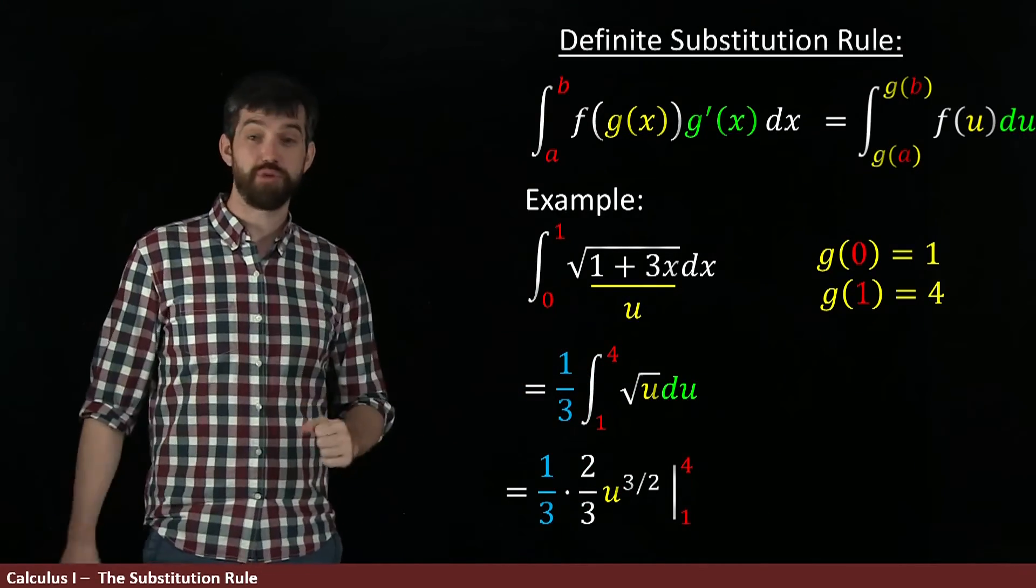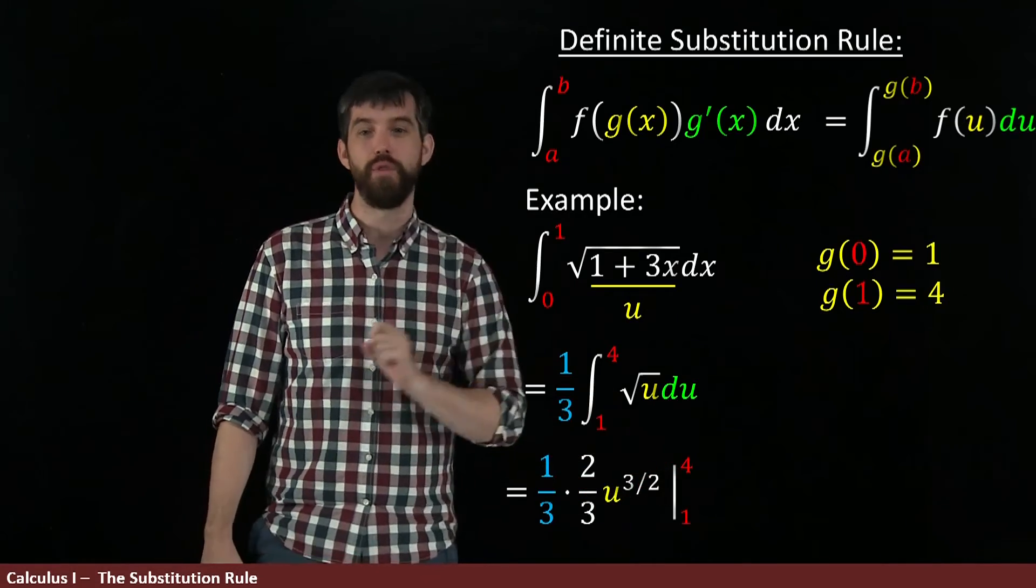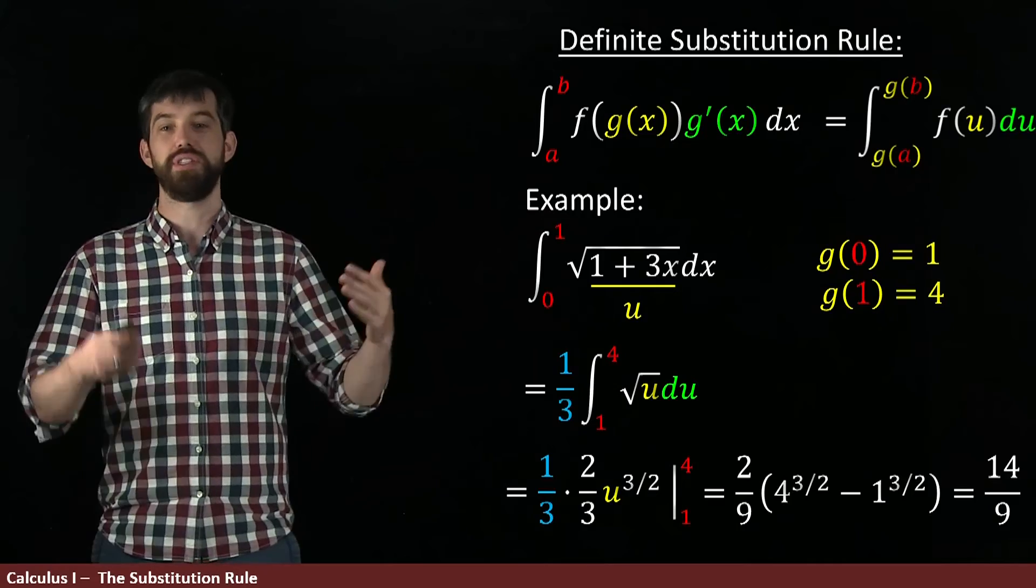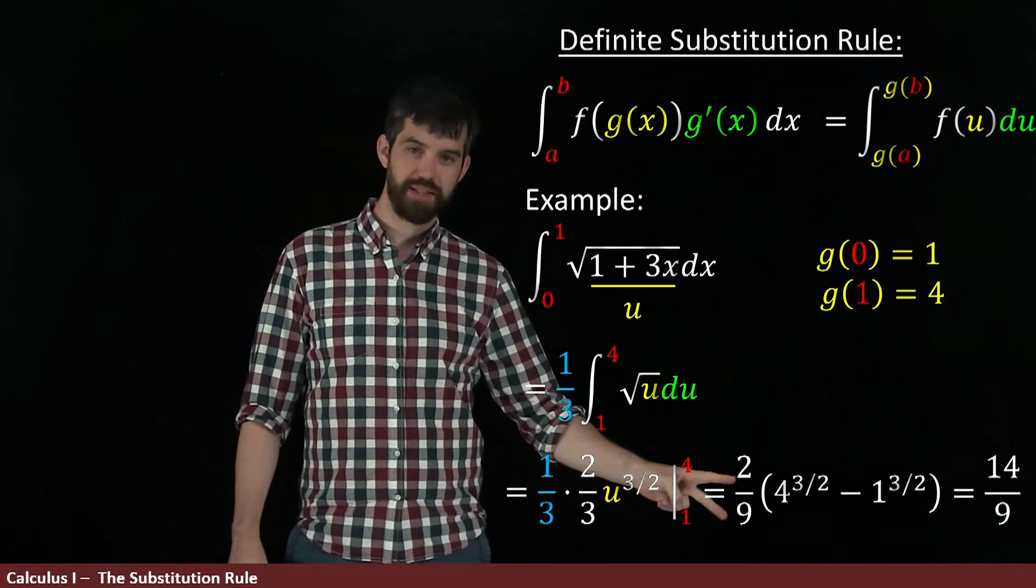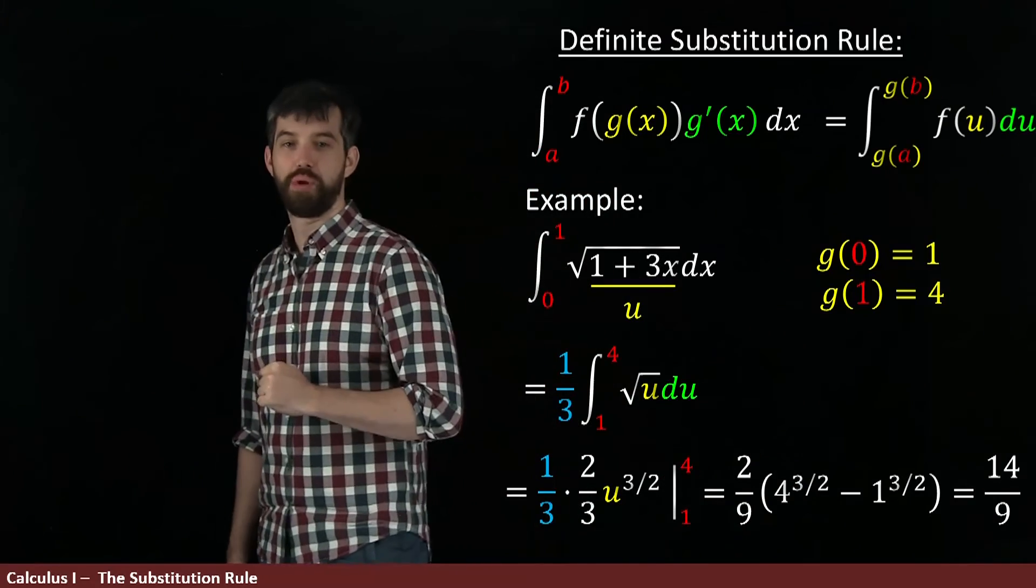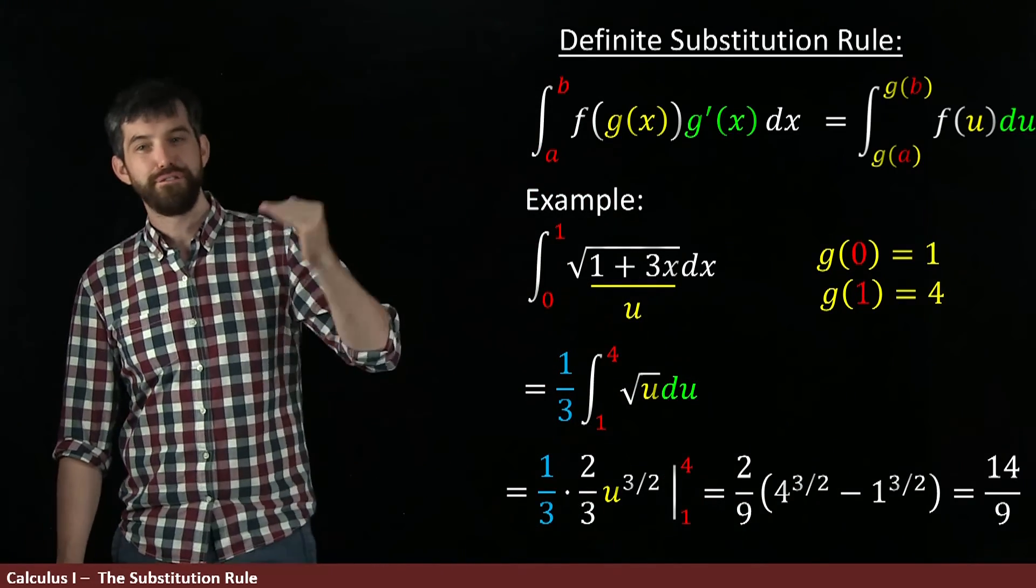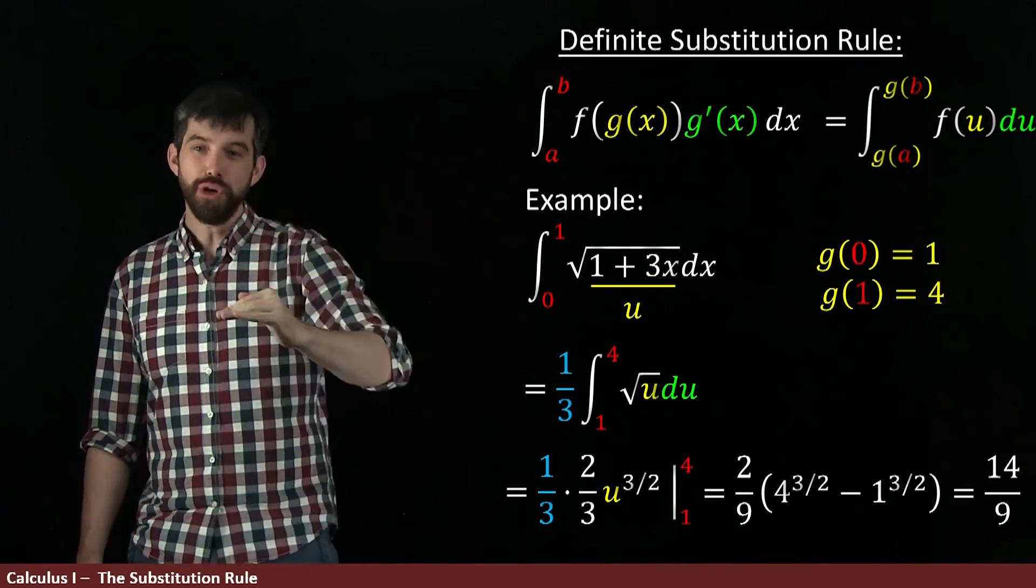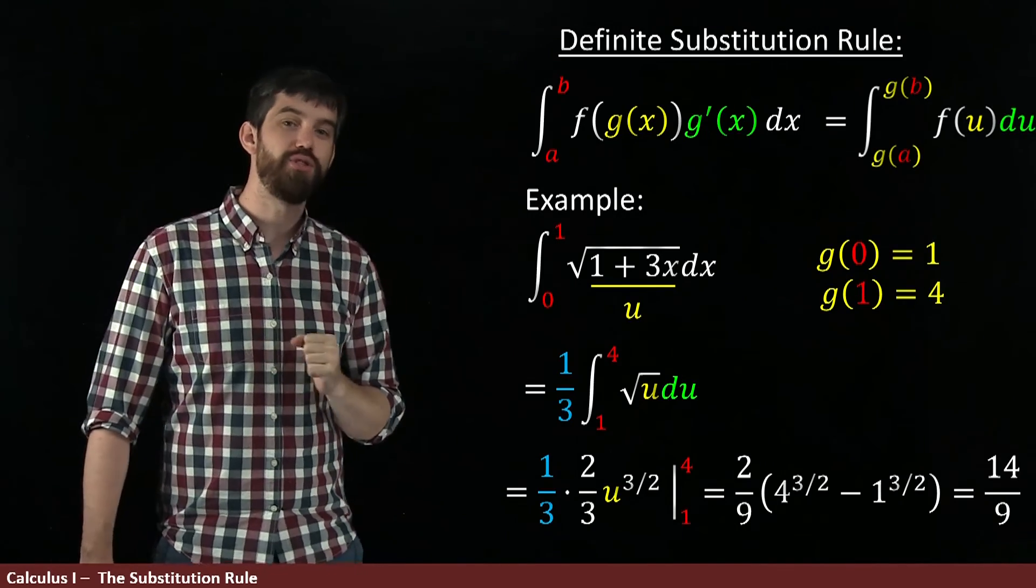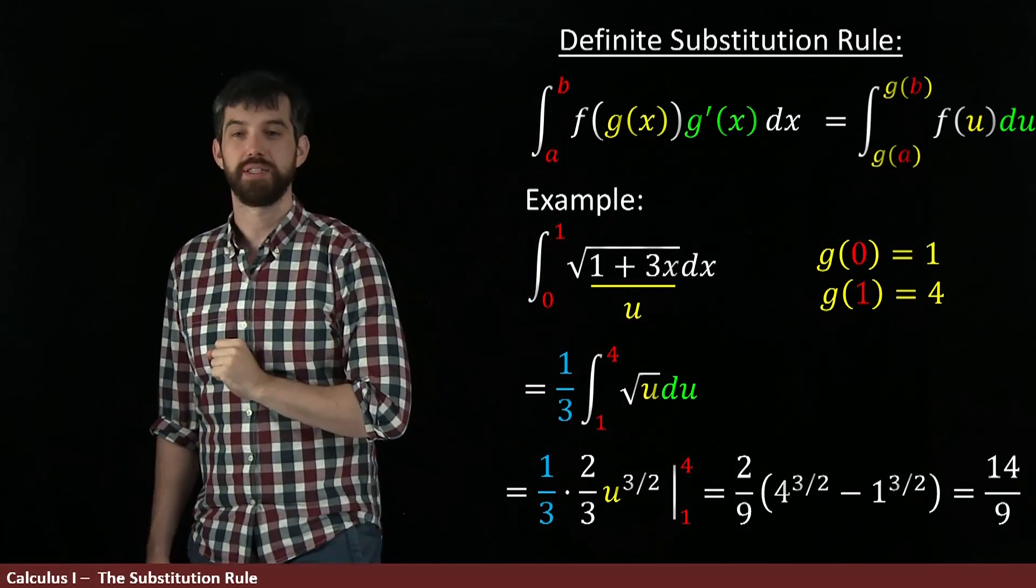Nonetheless, the final step that is remaining for us is to evaluate the 4 and the 1. So I'm just going to plug them in. I can say this is the 1 third times the 2 thirds is the 2 ninths. So I get my 2 ninths here. And then it's just the 4 to the 3 halves minus the 1 to the 3 halves. I can say 4 to the 3 halves is like 2 cubed, which is 2, 4, 8. 8 minus 1 is 7, and so I get, in the end, 14 ninths.